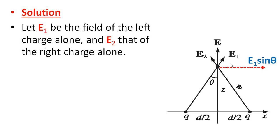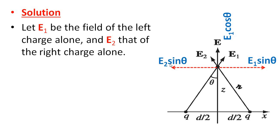This component will be the sin theta component and this component will be the cos theta component. So E1 is split here into E1·sin theta and E1·cos theta. Similarly E2 is split into E2·sin theta component and E2·cos theta component.